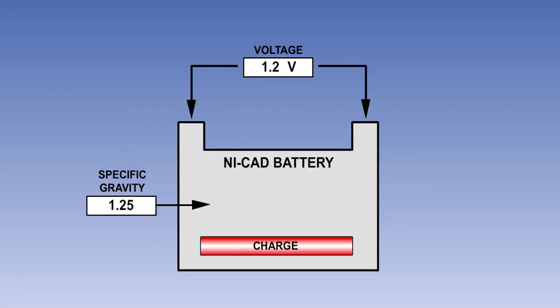Unlike the lead acid battery, the specific gravity of the NICAD battery electrolyte does not change, and the voltage variation from fully charged to fully discharged is very slight. The only way to determine the state of charge is to carry out a measured discharge test or capacity test.